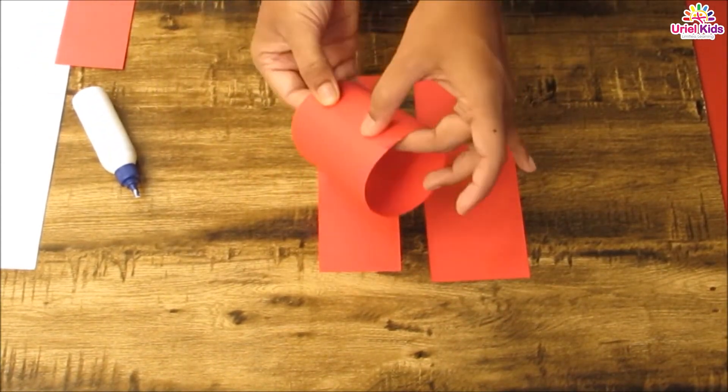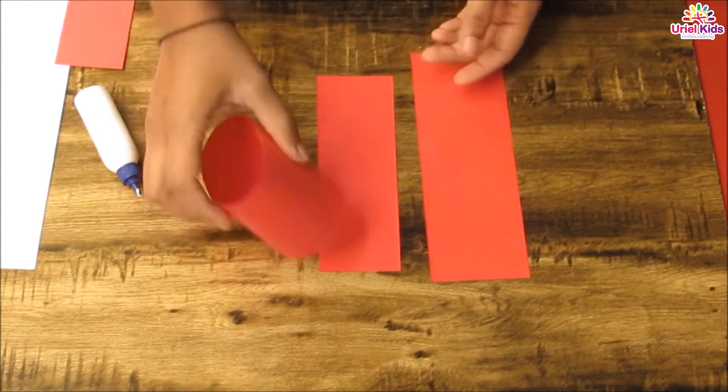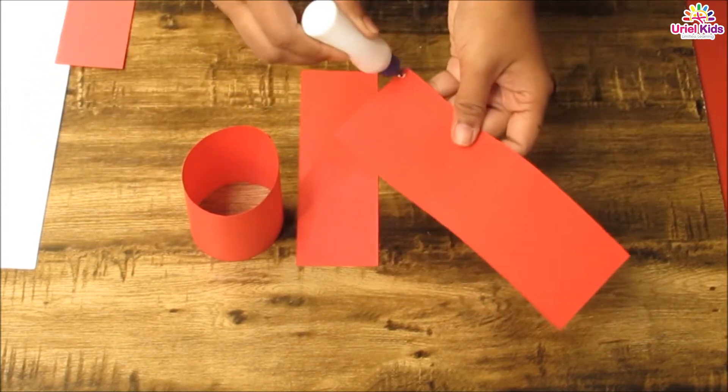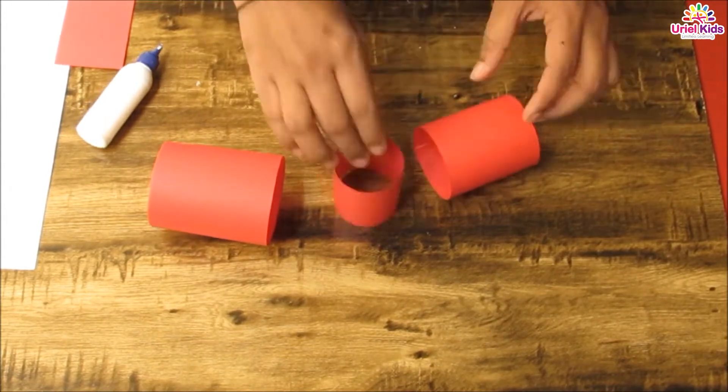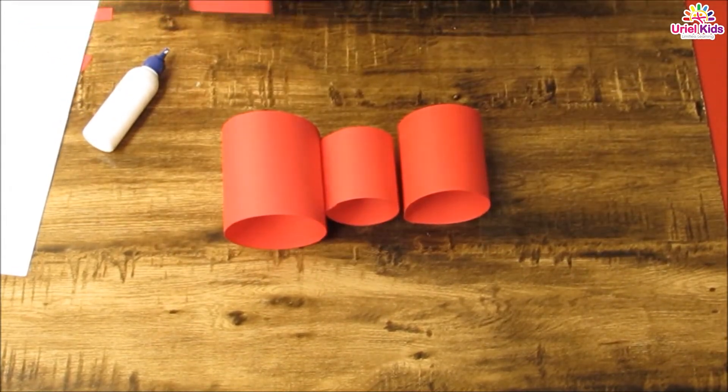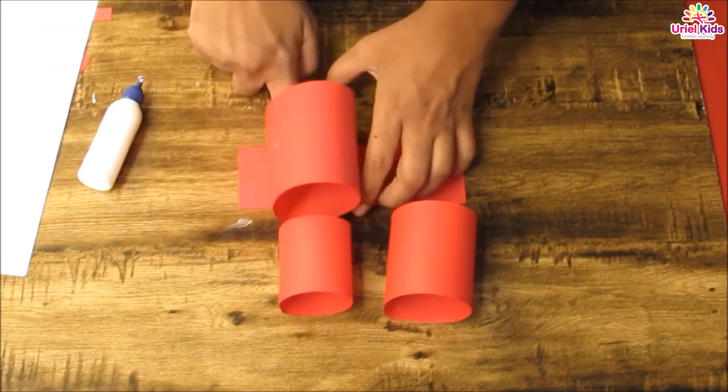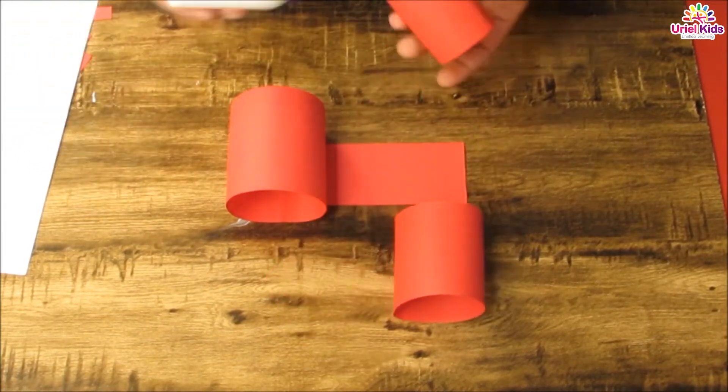While the child is sticking, parents can talk about the cylinder shape, saying it is a three-dimensional shape which is round and has a top and bottom in the shape of a circle, and that the top and bottom are of the same size.